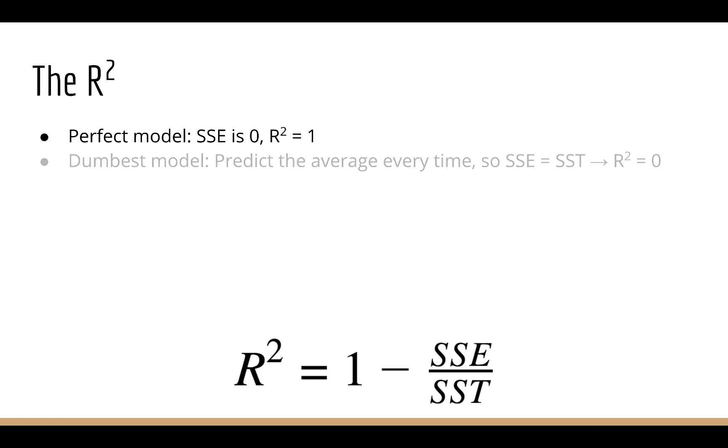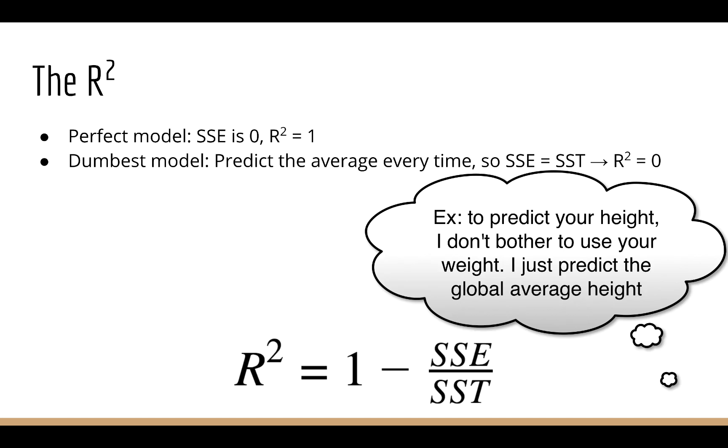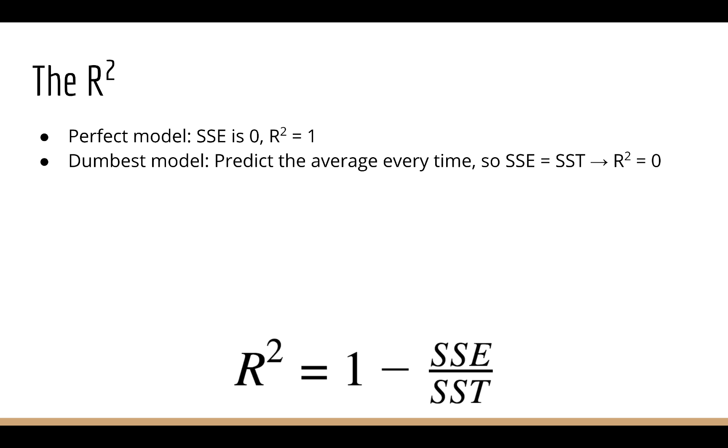What happens if I just have the dumbest model possible? Suppose I don't even bother using the inputs, I just predict the average target every time. Well then my mean squared error is equal to the variance, and so I get 1 minus 1 equals 0. So an r squared of 0 means I'm using the dumbest model possible.